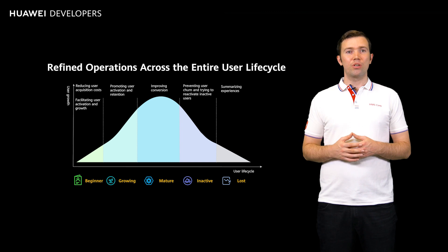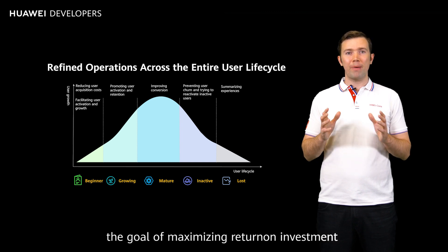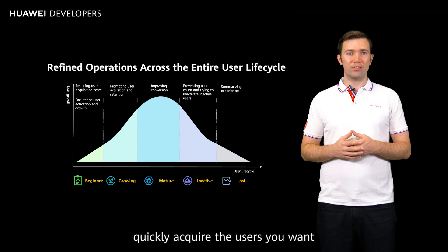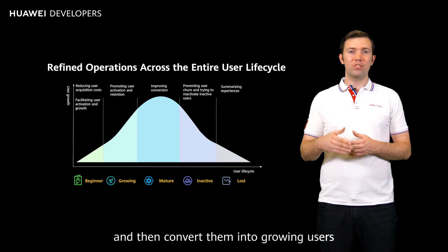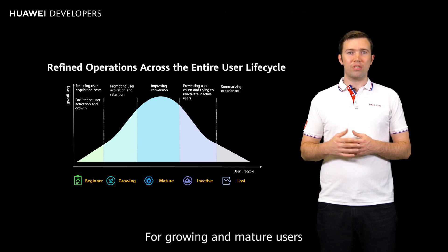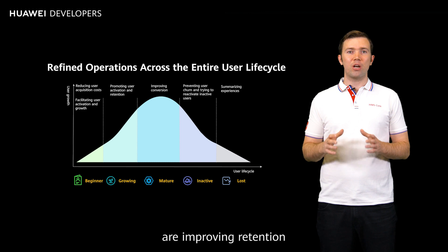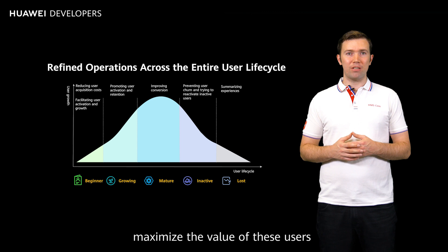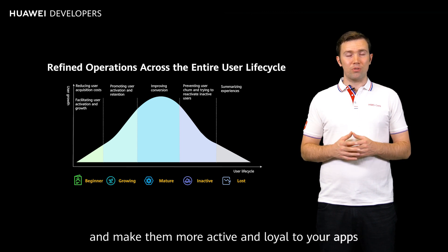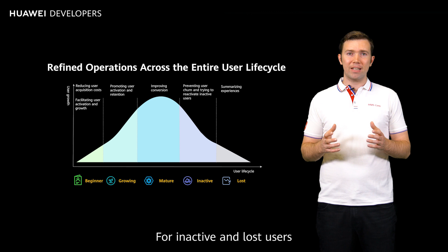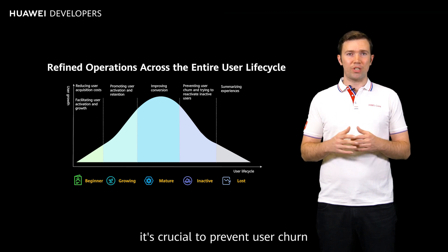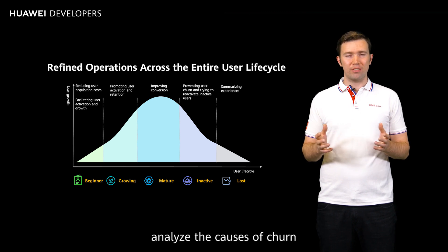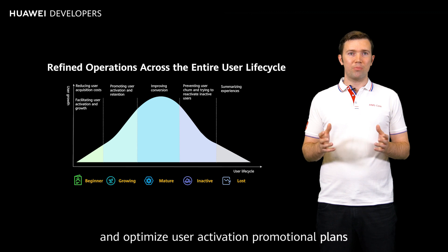For beginner users, growth plans should be made with the goal of maximizing return on investment and user interaction, to ensure that you can quickly acquire the users you want and then convert them into growing users. For growing and mature users, the key areas of focus are improving retention and conversion rates — it is very important to maximize the value of these users and make them more active and loyal to your apps. For inactive and lost users, it's crucial to prevent user churn, try to win back lost users, and analyze the causes of churn and optimize user activation promotional plans.